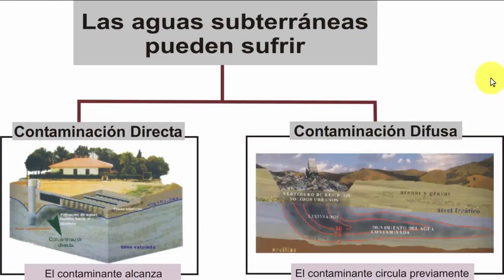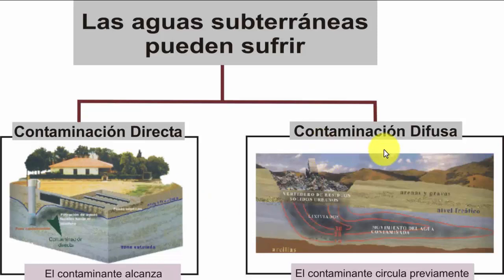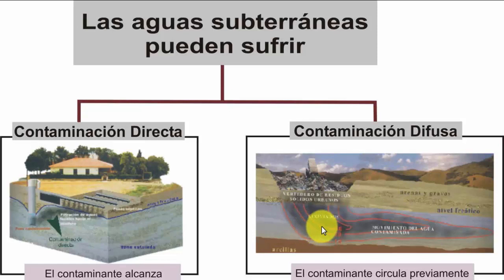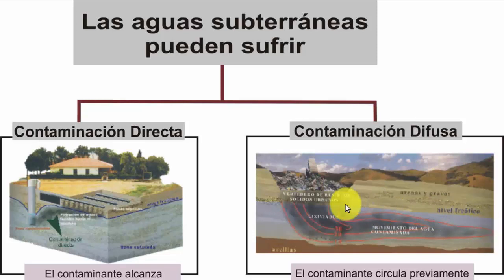Las aguas subterráneas pueden sufrir contaminación directa, como cuando puntualmente tengo una estructura con una fosa séptica o un lixiviado, o difusa, cuando en una zona de vertedero los lixiviados llegan al agua y esta comienza a moverse hacia otra zona. Por esa zona saturada comienza a circular el contaminante.